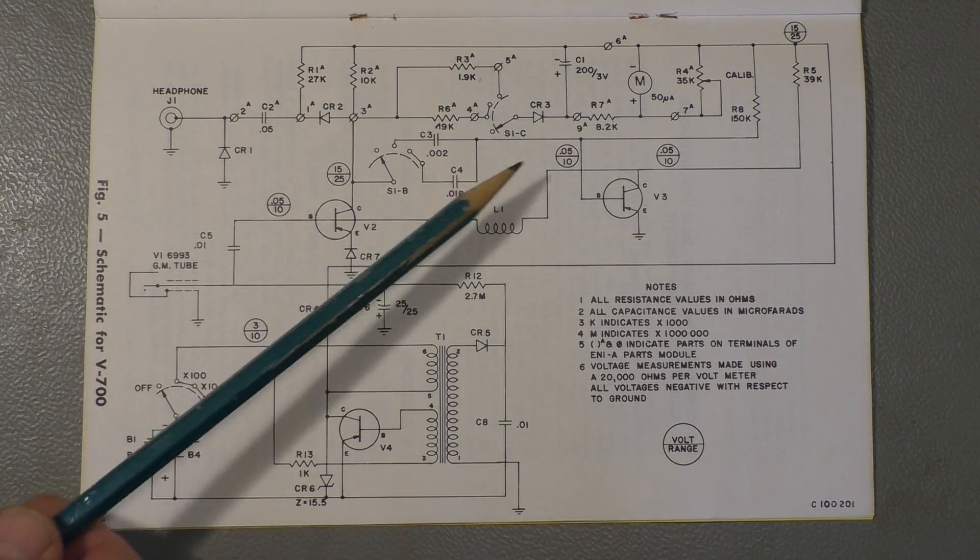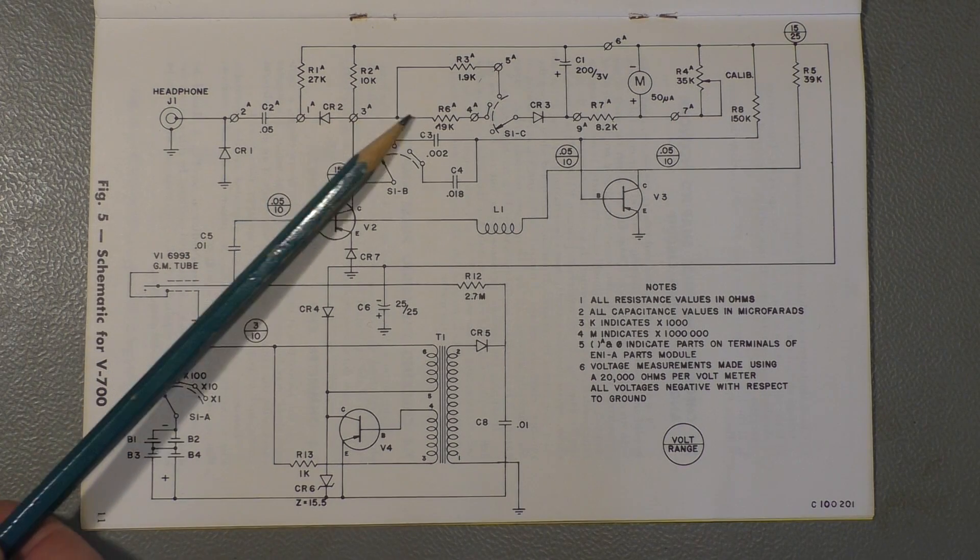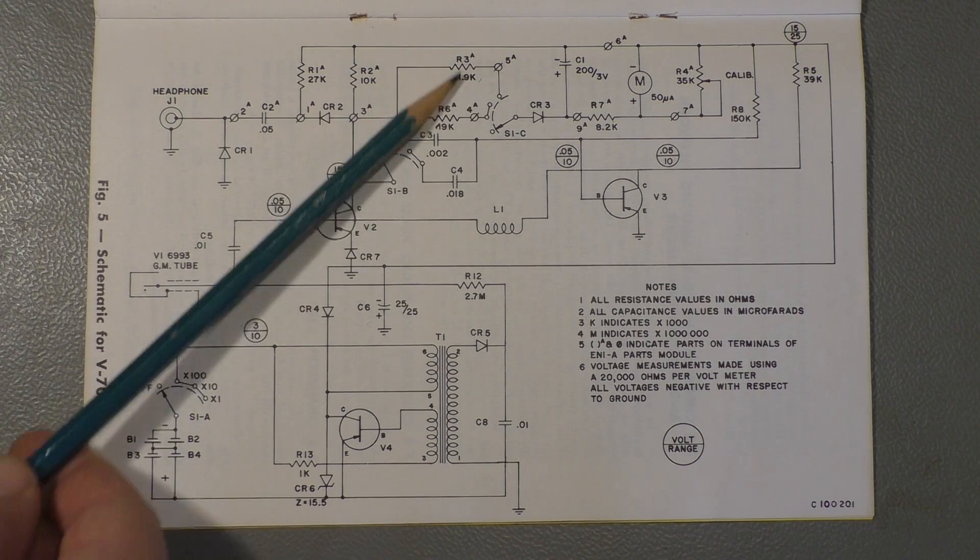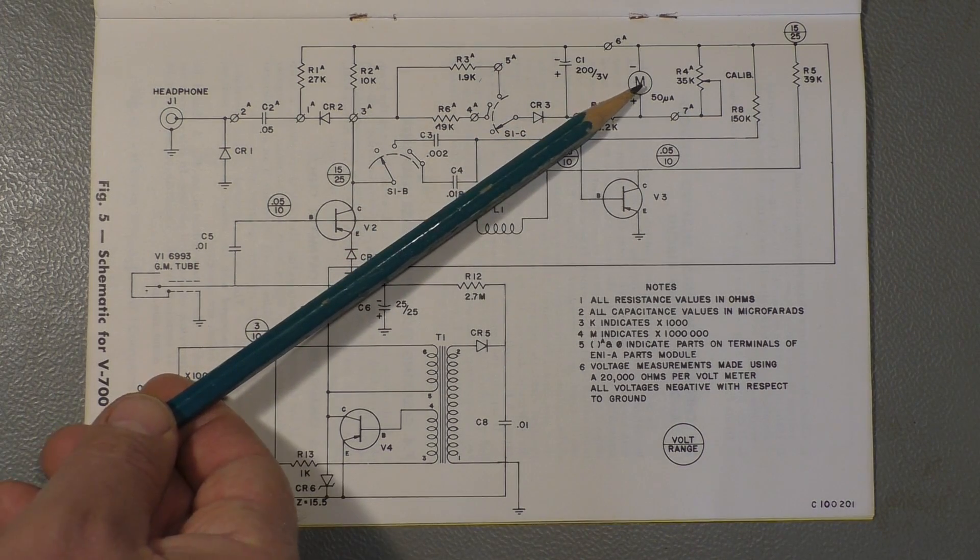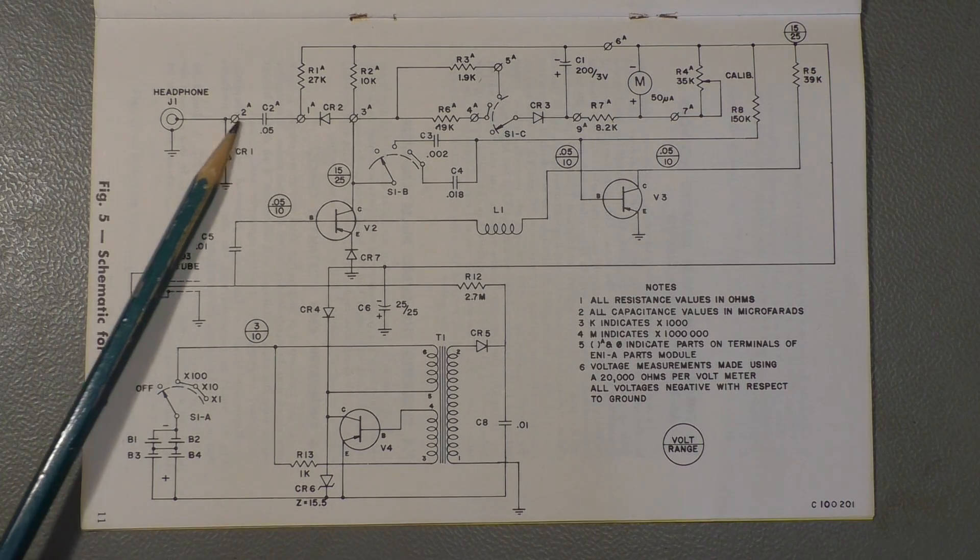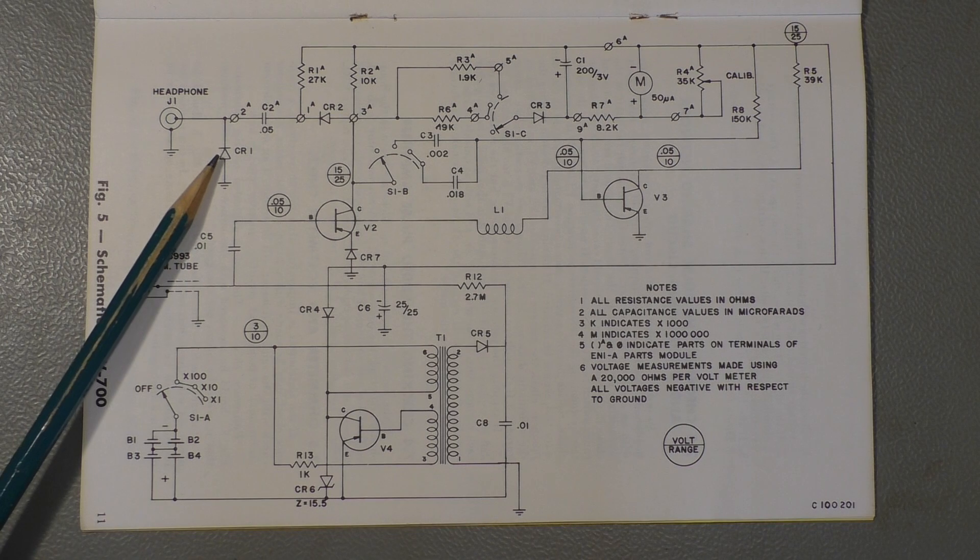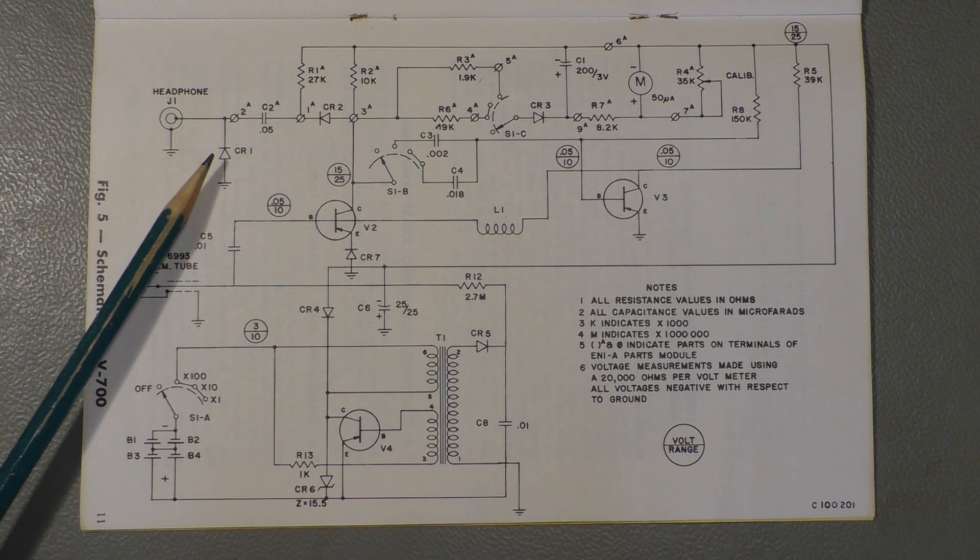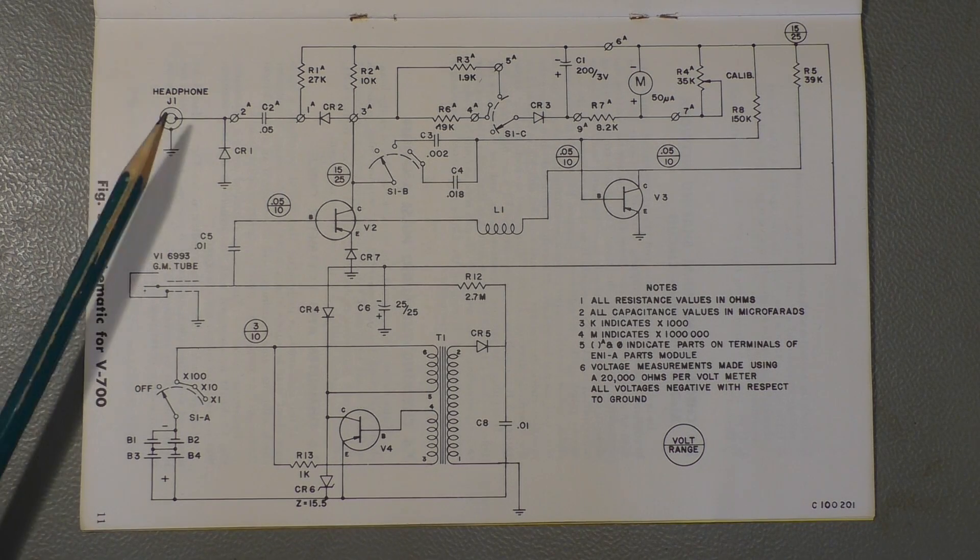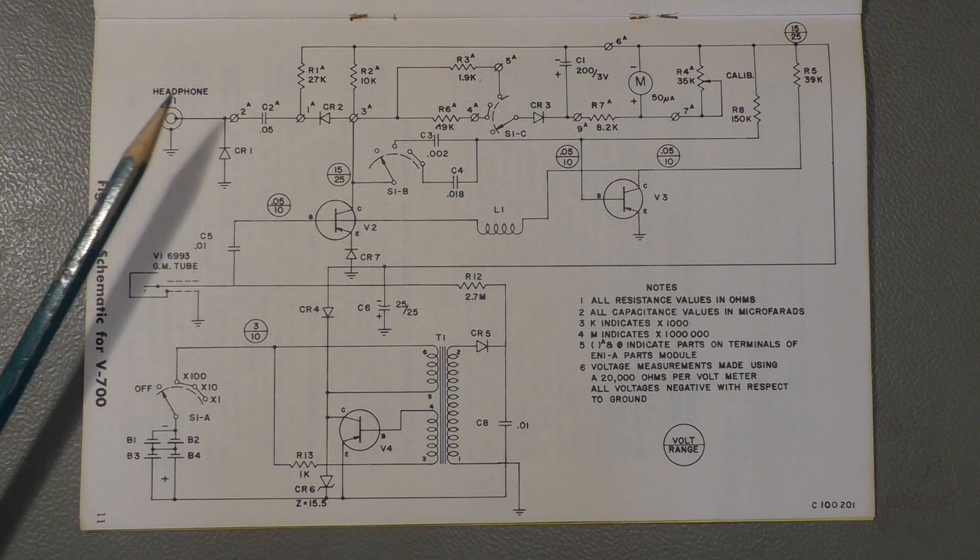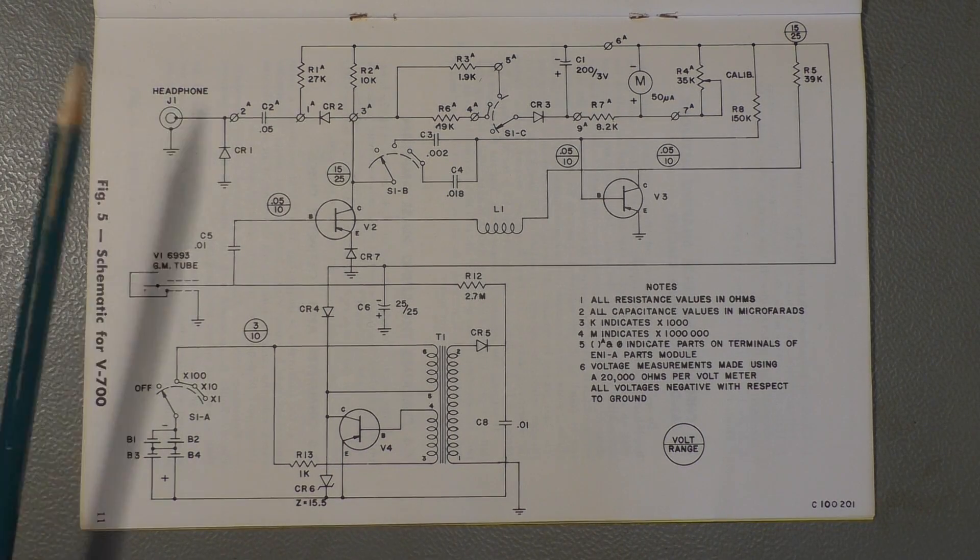Then we have, so the signal comes up that way, goes to this switch with the two resistors, another diode, and then to the meter. And here is another diode, that goes out to the headphone jack. And this diode here, CR1, is just to limit the impulse to the headphone jack, and also to eliminate any negative impulses. We only want positive impulses here.